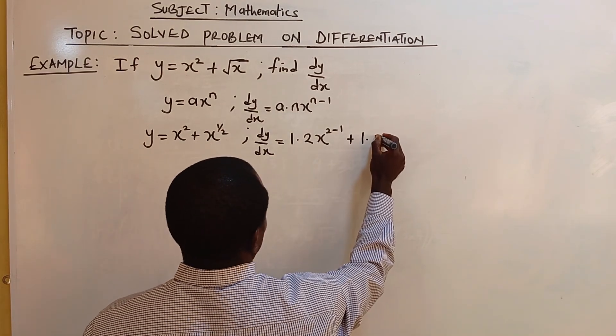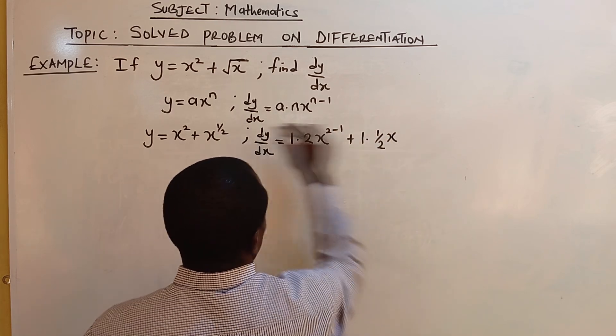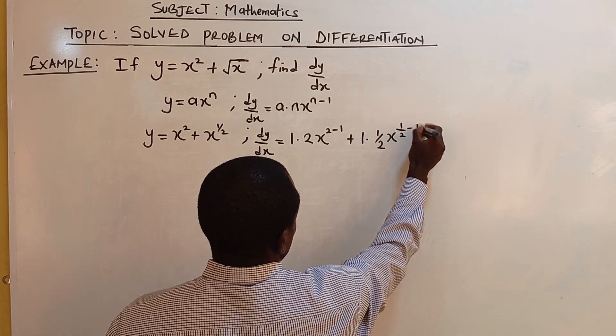There's 1 here, 1 multiplied by half, x raised to the power half minus 1.